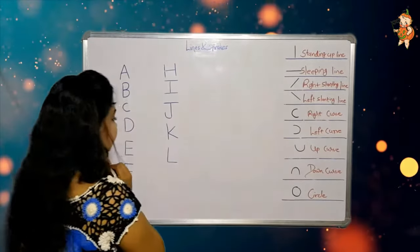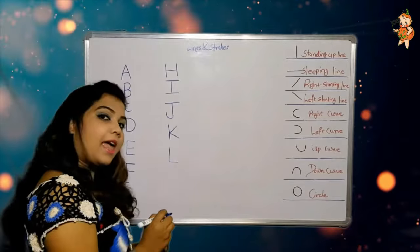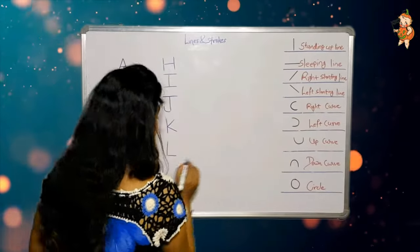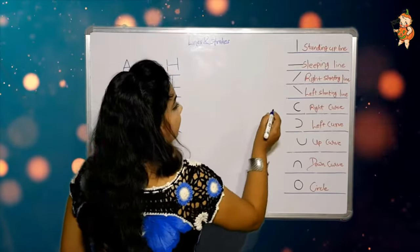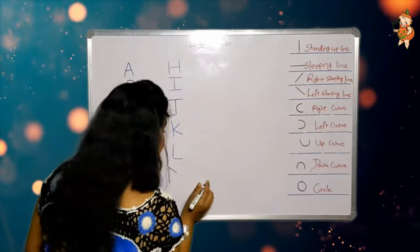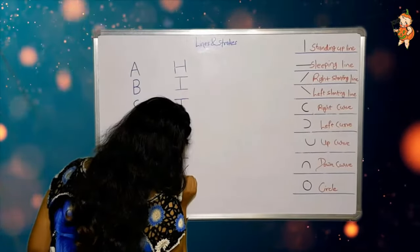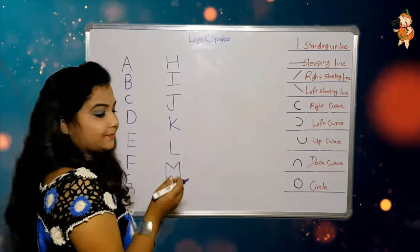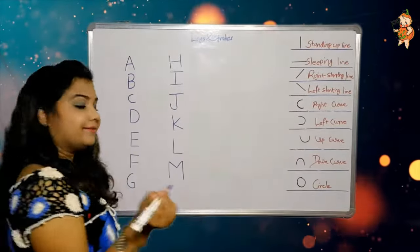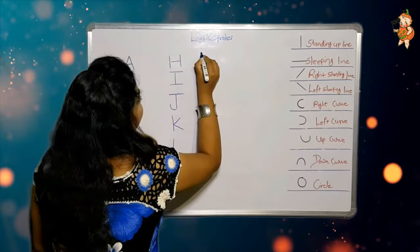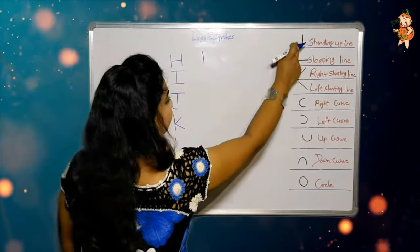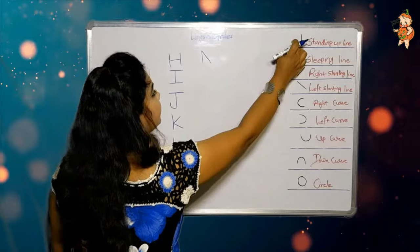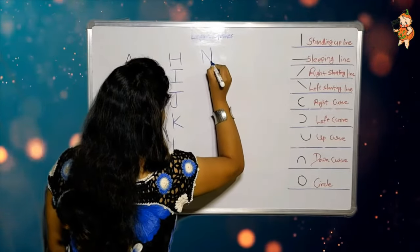One right slanting line, one right slanting line — our M is ready. Now it's time to make N — one standing up line, one left slanting line, and one standing up line. Our N is ready.